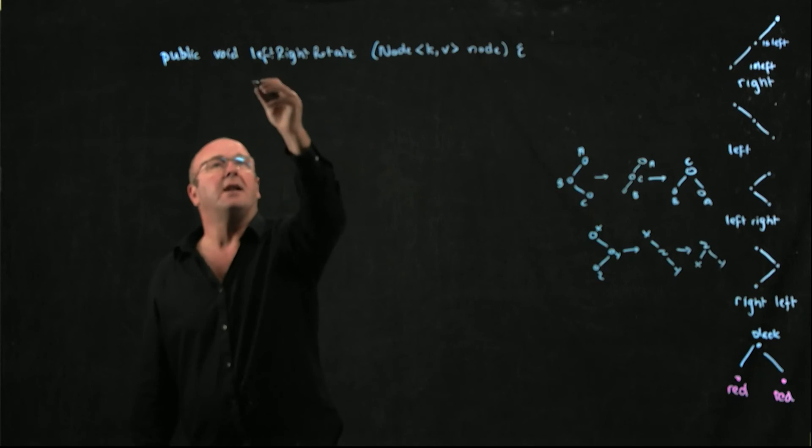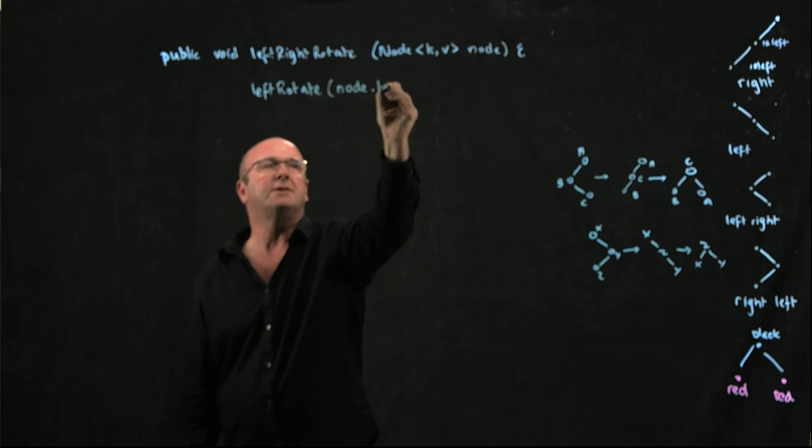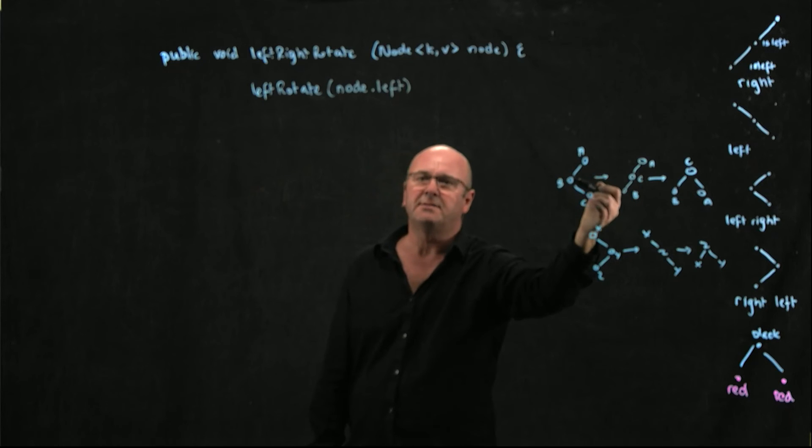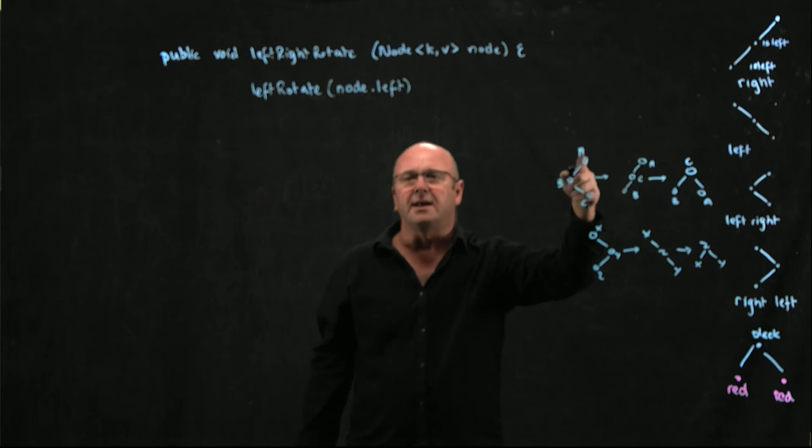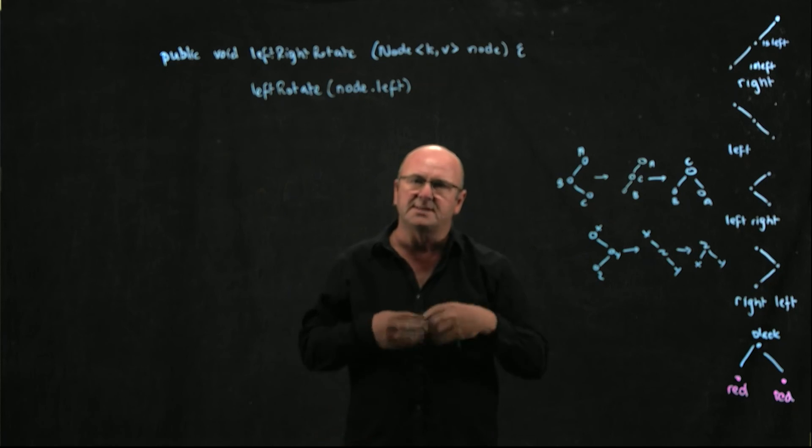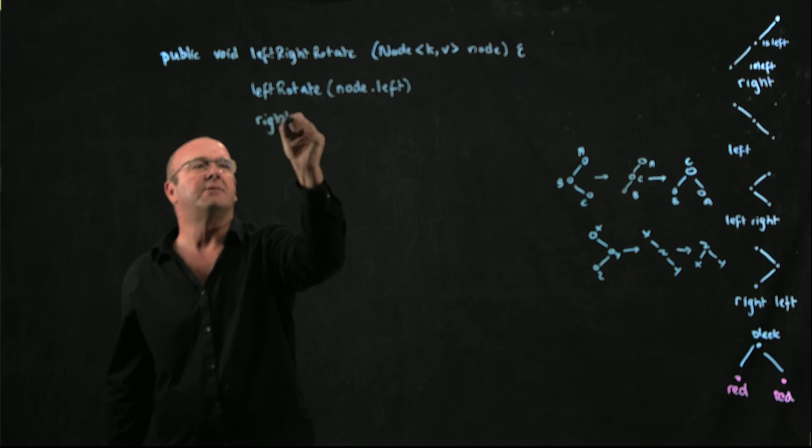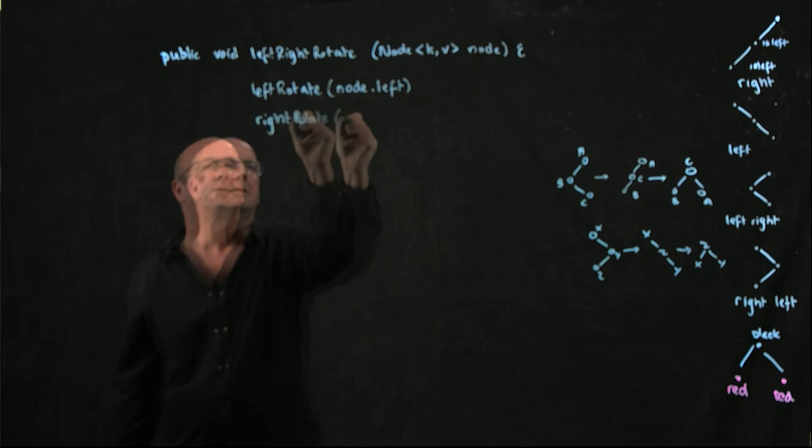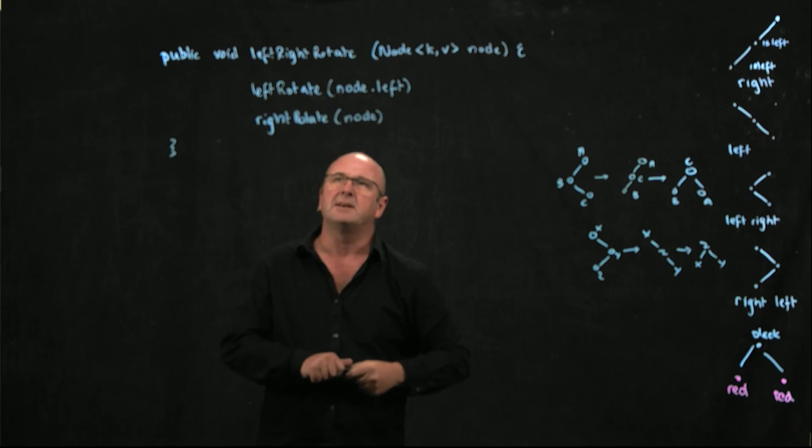So we're going to do a left rotate on node.left. That's the parent node that we're going to rotate. Remember that our left rotate handles setting parent pointers, setting the appropriate child pointers and parent pointers. And so we don't need to do anything. And all we need to do then is a right rotate on the grandparent. So that's all the code we need for a left-right rotate.